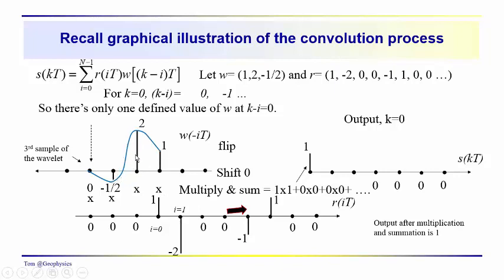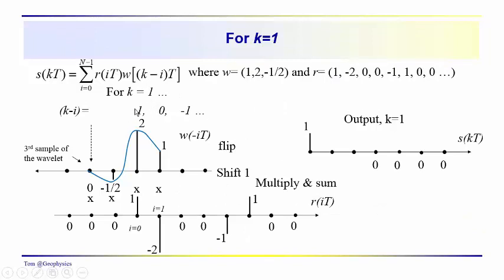Again, we're scaling this wavelet by one, so we should get one on the output at k equals zero. Now for k equal one, we are looking at samples in the wavelet that run from one to zero to minus one to minus two and so on. The reflectivity sequence runs from zero to n minus one. So we're multiplying the zeroth reflection coefficient times sample one. So we get one times two plus one times minus two, and our output is one times two minus two times one plus zero times zero, which is equal to zero. So our second sample is just equal to zero on the output at k equal to one.